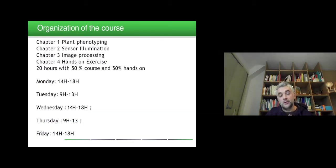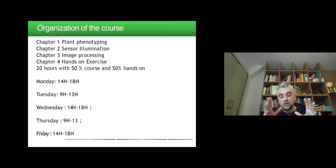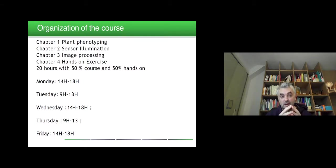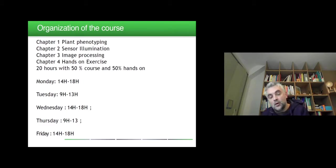The organization of the course will be the following: there are four chapters — one dedicated to plant phenotyping, a short one; another dedicated to sensors and illumination; then chapter three, the core of the course on image processing; and then hands-on and exercises. We will aim for a 50-50 balance between course and hands-on, but we will start with more course content and progressively move toward more hands-on as we advance.